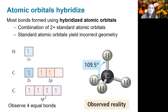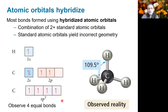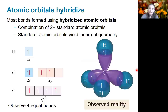What happens in reality is that carbon actually forms four equal bonds. We can explain that by considering the 2s and the 2p orbitals mixing to form a new type of orbital — the sp3 orbital. We now have four new equal unpaired electrons, which can interact with four hydrogen atoms. Here's a picture of those four sp3 orbitals interacting with the hydrogen atoms.